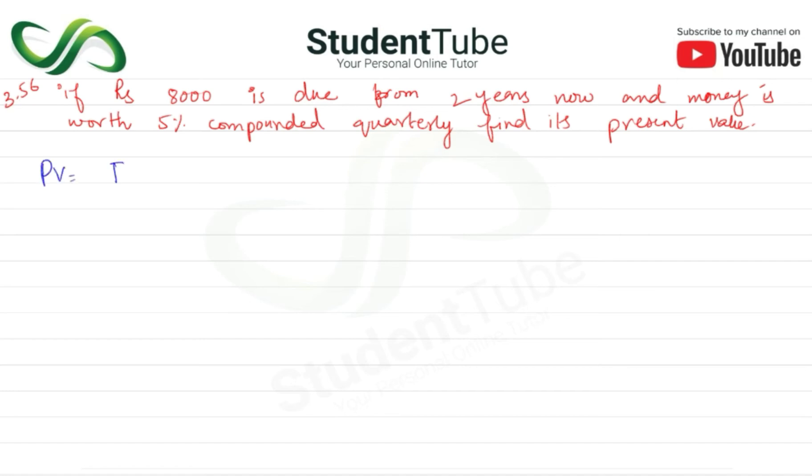equal to FV × (1/(1+r))^n. So as we know that n is equal to m multiplied by t. M kya hai? Compounded jitne ek year mein jitni bar compound hoga woh m hota hai.